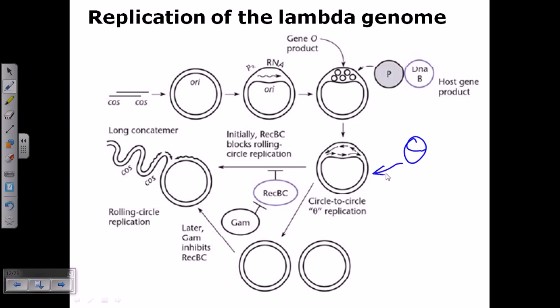As you can see here in this picture, another one is the rolling circle replication, something like that which you can see in this picture. Now in this case, it is very important to switch between this theta mode of replication